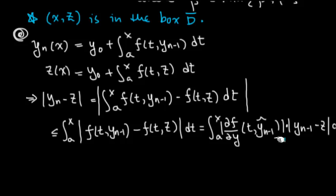Here we need the fact that yn minus 1 hat is in between yn minus 1 and z. If they're both inside the box, we can guarantee this point is in the box. Since this point is in the box, this can be replaced by the maximum possibility, m2.